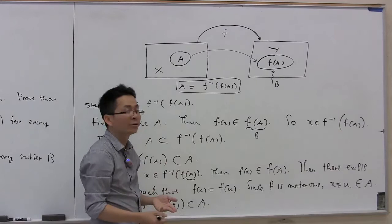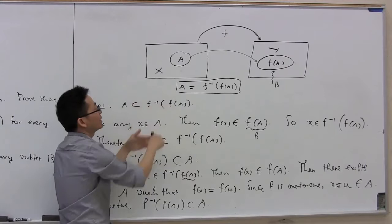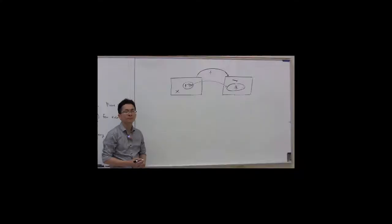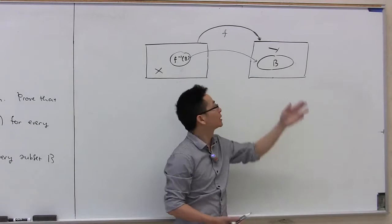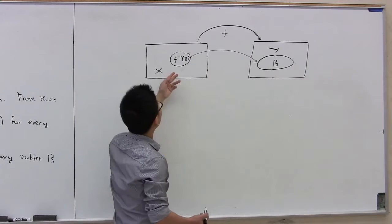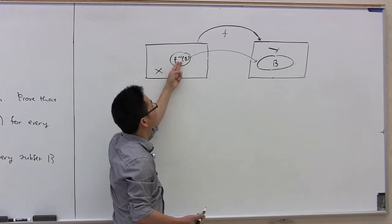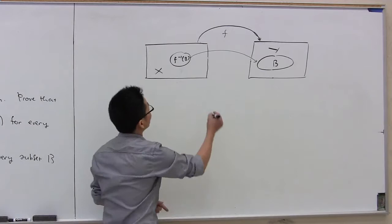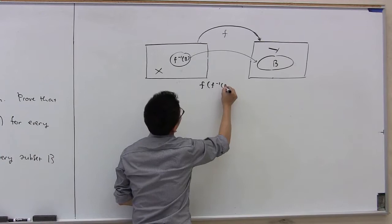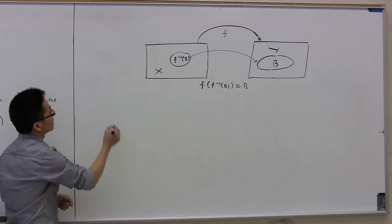Note that one inclusion — A is a subset of f inverse of f of A — holds for any function f without requiring 1-to-1. Now we're going to work on the second part of the problem. Let B be a subset of Y. We can compute f inverse of B, which is a subset of X, and then compute the image of that set under f. Our goal is to show that f of f inverse of B equals exactly B, provided that f is an onto function.